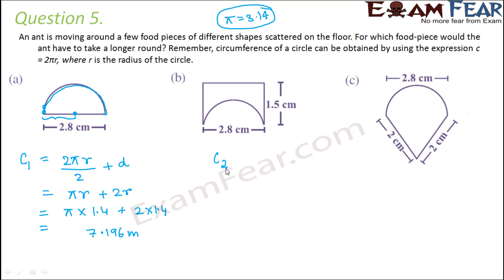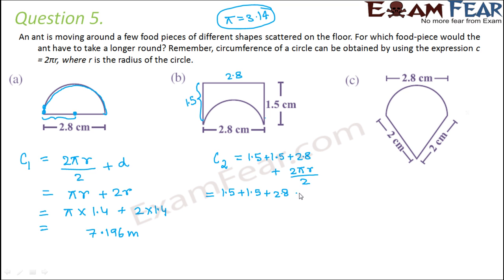Now for the second figure, the circumference C2 is the total length of all three straight sides plus a semicircle. Each straight side is 1.5 cm and the base is 2.8 cm. So C2 = 1.5 + 1.5 + 2.8 + πr = 1.5 + 1.5 + 2.8 + π × 1.4, since the diameter is 2.8 and the radius is 1.4. This value comes out to be approximately 10.2 cm.